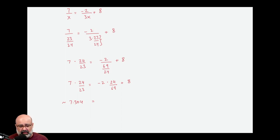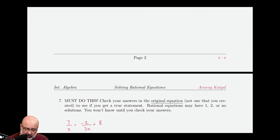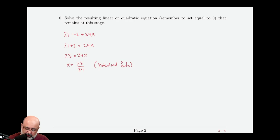For the right-hand side, we can just do negative 2 times 24 divided by 69 plus 8. And that gives us the same thing. Approximately 7.304347826, which is the exact same thing I had here. That's a true statement. That means 23 over 24 moves from being a potential solution to now being the solution to this equation.